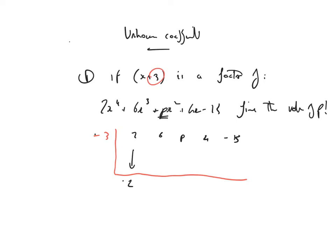Let's get the coefficients in. Let's check, is there any zero coefficients? There's not, but definitely worth checking. 2, 6, p, 4 and minus 15, drop the 2 down. 2 times minus 3 is minus 6, 6 minus 6 is 0, 0 times minus 3 is 0. p plus 0 is p, p times minus 3 is minus 3p, 4 minus 3p, that's just 4 minus 3p.